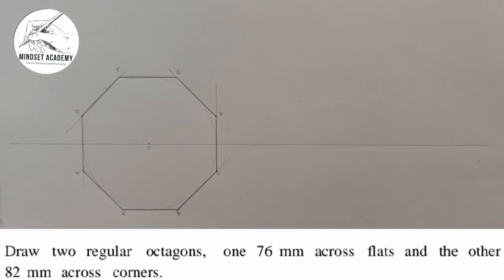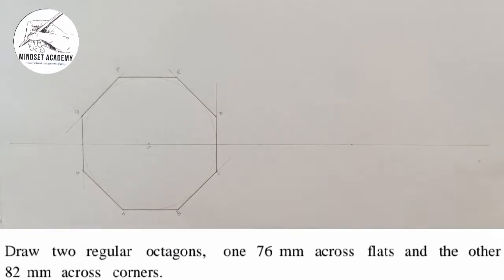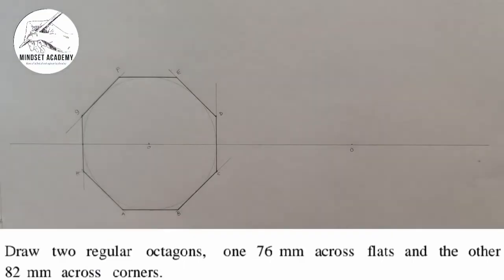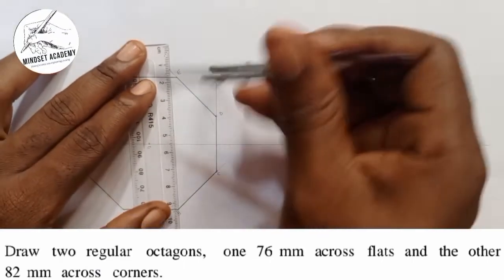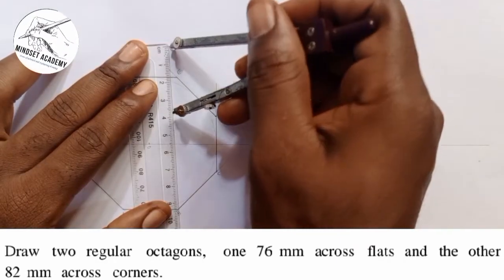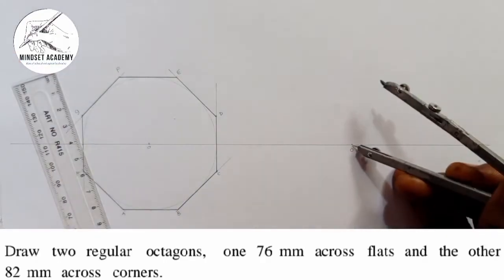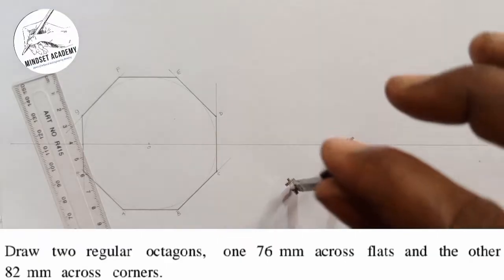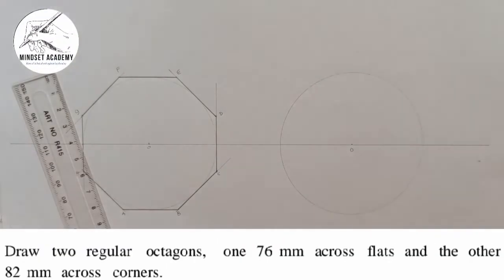Now for the second one — 82 millimeters across corner. Pick a new point, call it O. Half of 82 is 41, so measure 41 millimeters, place the compass at point O, and draw a circle with radius 41 millimeters.